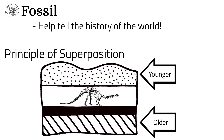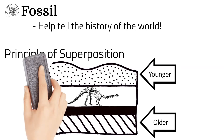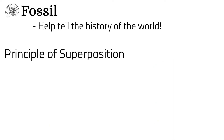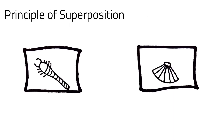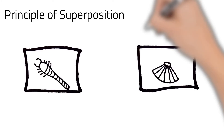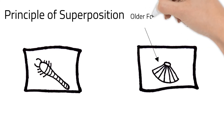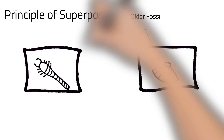Fossils help with relative dating of rock layers, especially if it's a fossilized organism that was on Earth for a short time. Looking at this diagram of rock samples, if we know this fossil is older than this one over here —